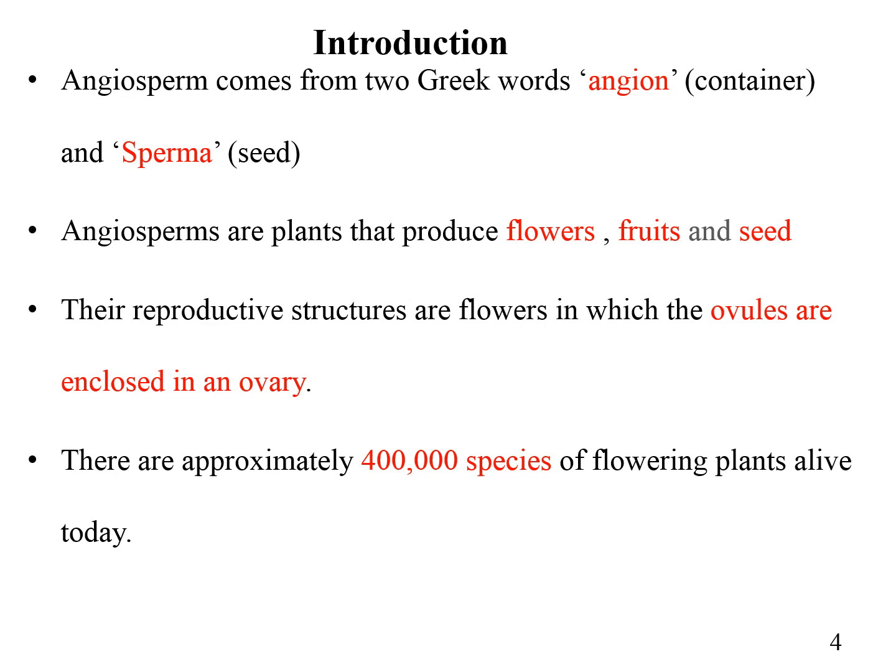'sperma' meaning seed. So angiosperms are plants that produce flowers, fruits, and seeds. Flowers are actually that part of the plant which contains the male and female reproductive organs, or sometimes both. Fruits are the mature floral organs of the angiosperm plant, and a seed is an embryonic plant enclosed in a protective outer covering which can grow into a new plant.